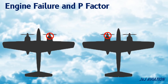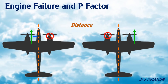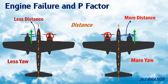This is because of the distance of the downward-moving propeller from the center. The downward-moving propeller creates more thrust. So less distance means less yaw, and more distance means more yaw. So the left engine is called the critical engine.